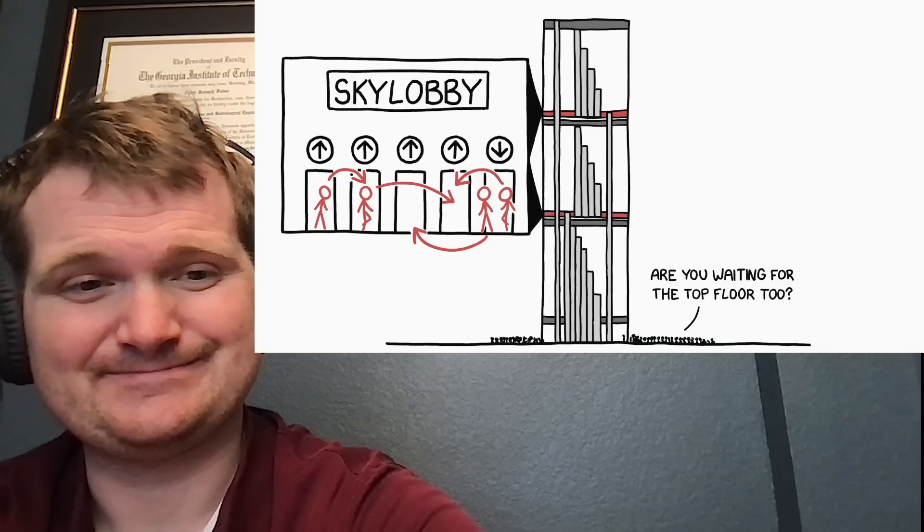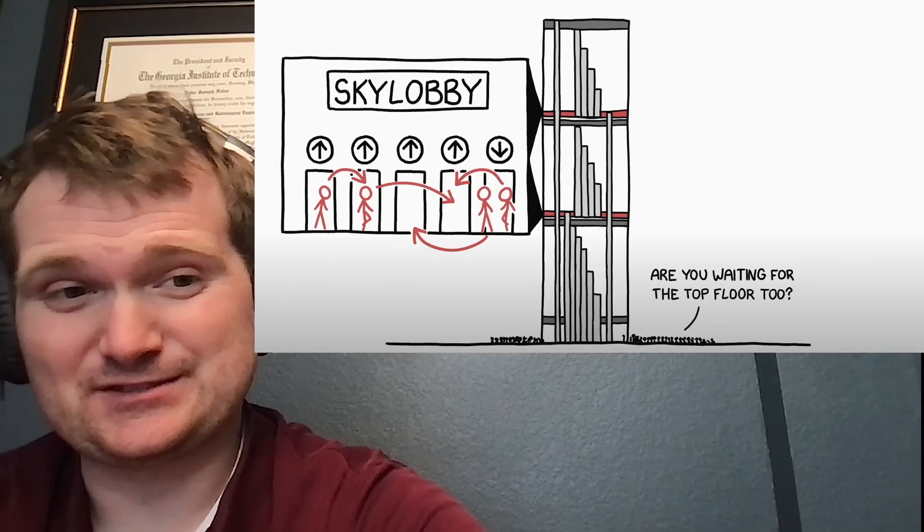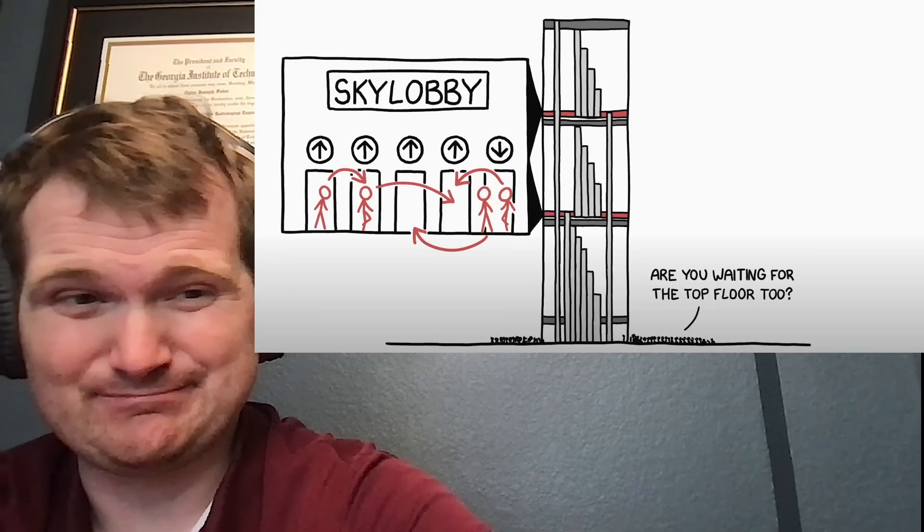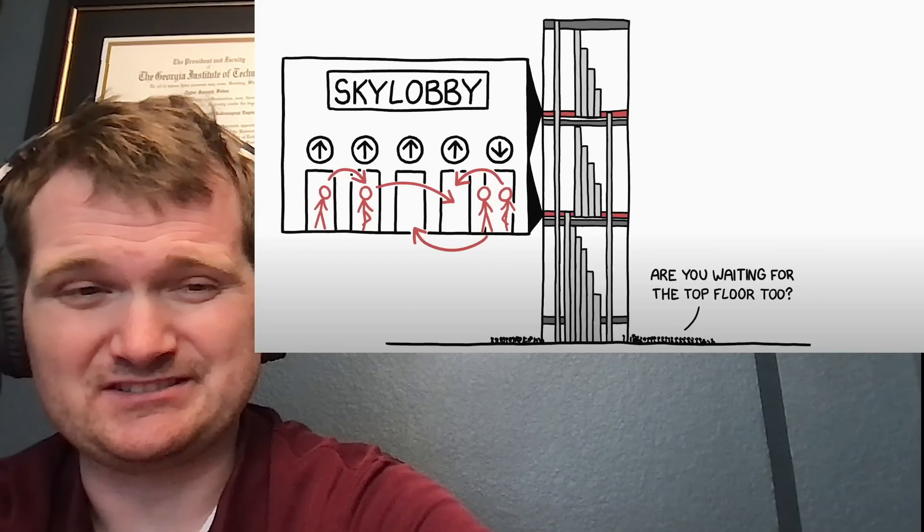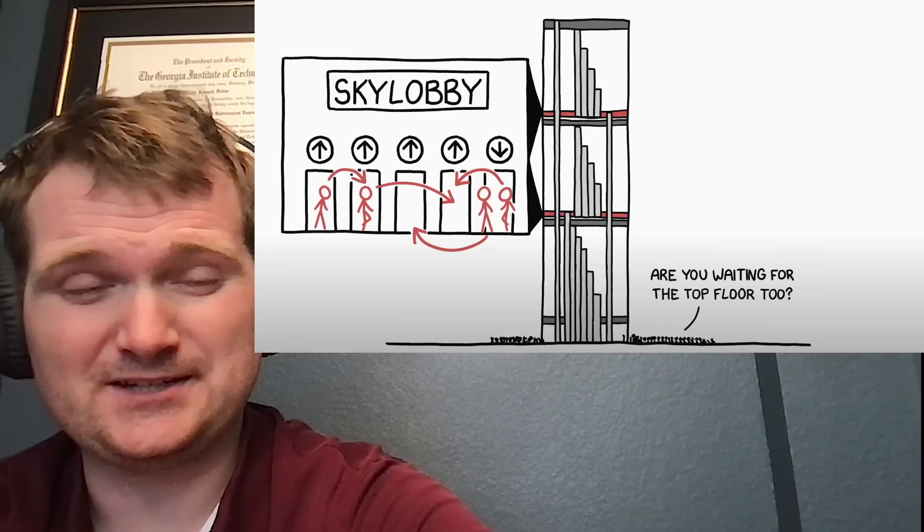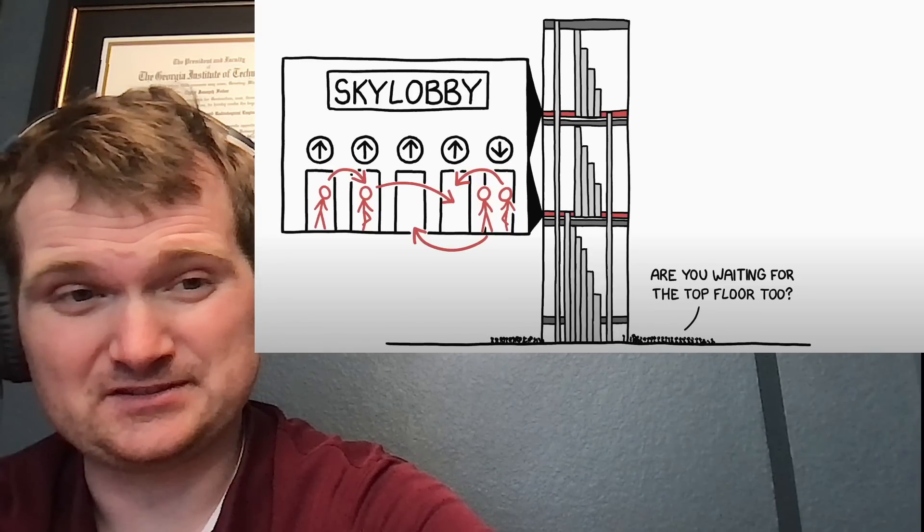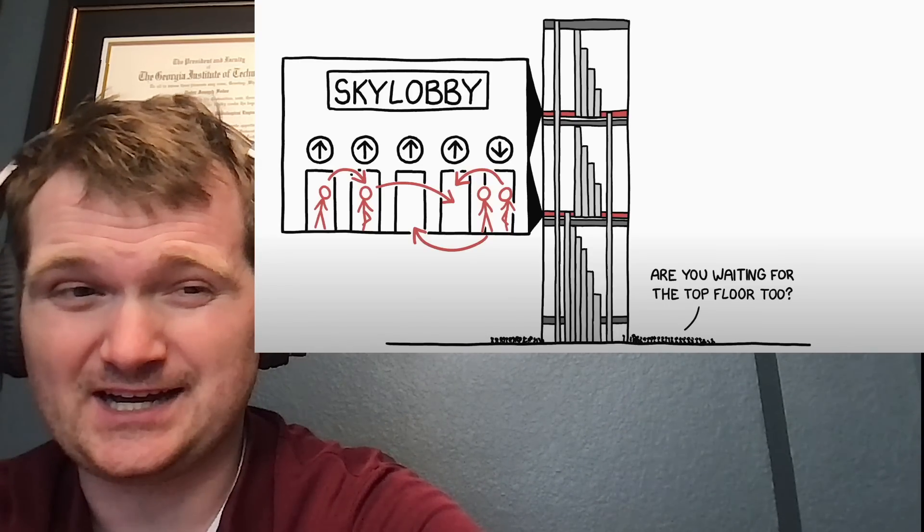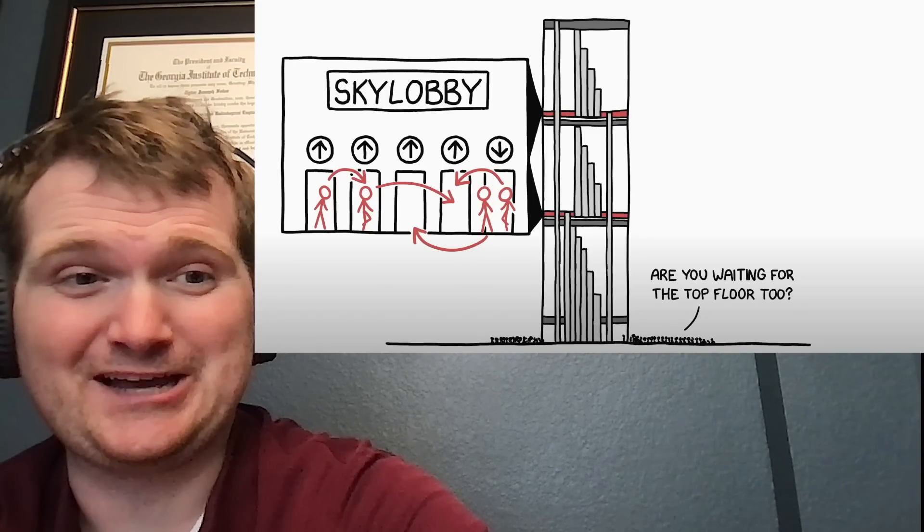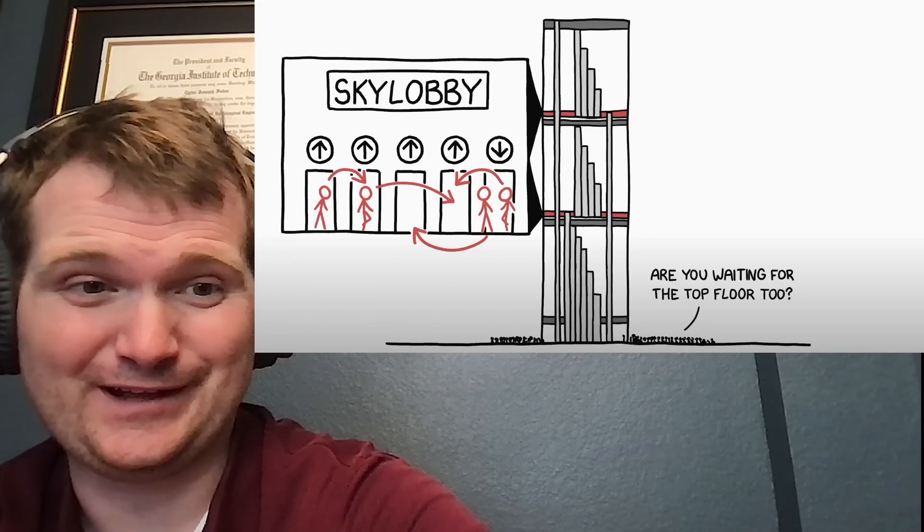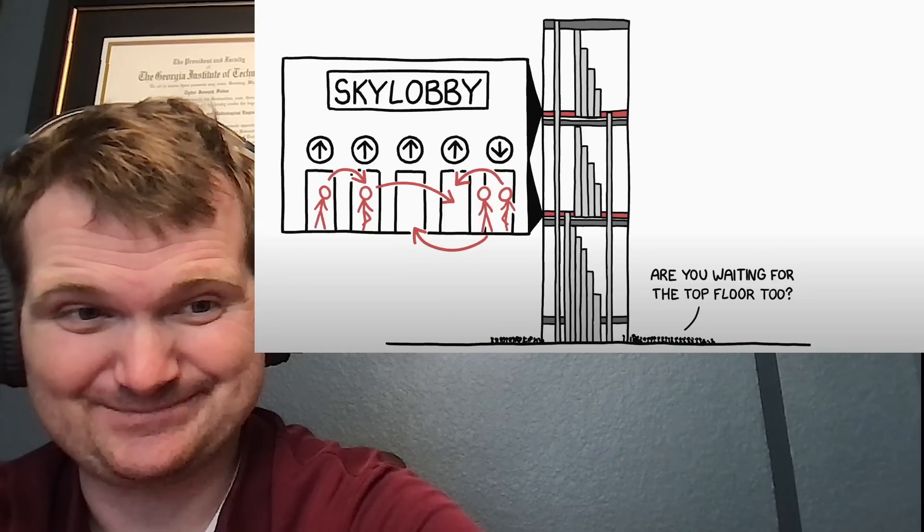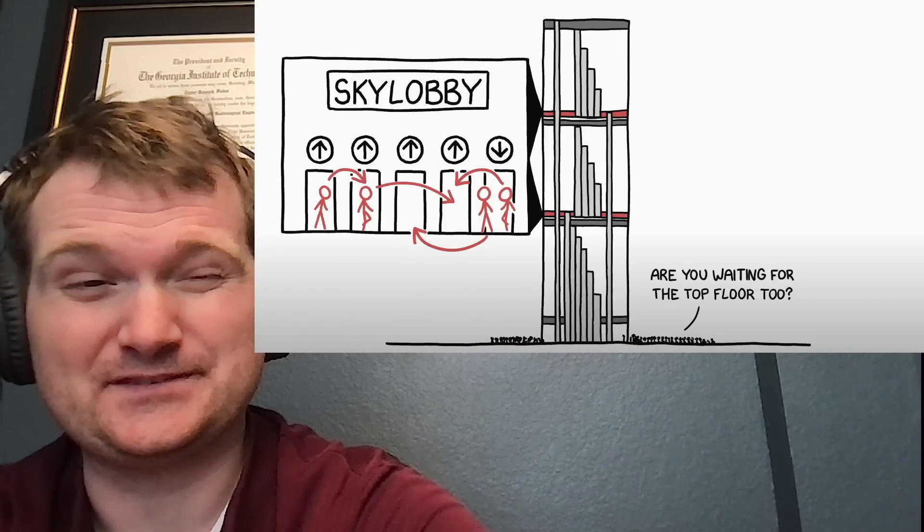For something a billion stories, I'm gonna assume a story is about four meters, that's about 13 feet which is more or less typical high rise. That's four billion meters or four million kilometers which is about three times the diameter of the sun. So even with basically high speed maglev elevators it's going to take a very very long time to reach the top.